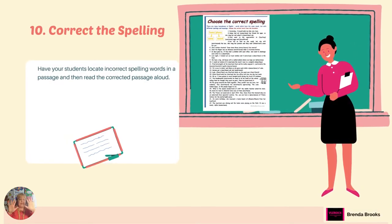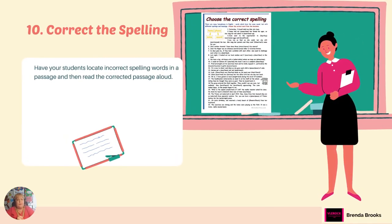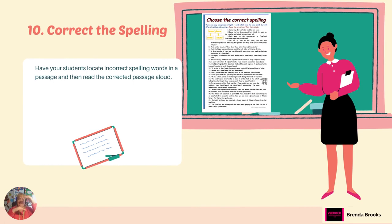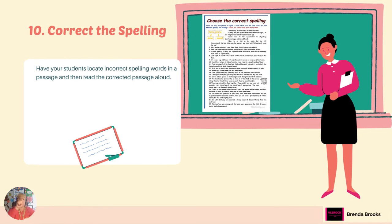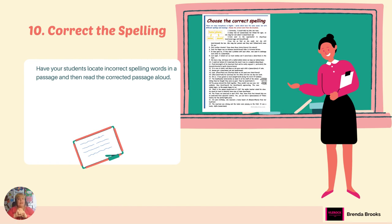Number ten: correct the spelling. This works for older students. Give them an article or text and have them go through it to find the spelling mistakes. Once they have found the spelling mistakes, it's really good to have them read aloud. When students read aloud, it helps them hear themselves speaking English, and it improves pronunciation, pacing, and intonation.